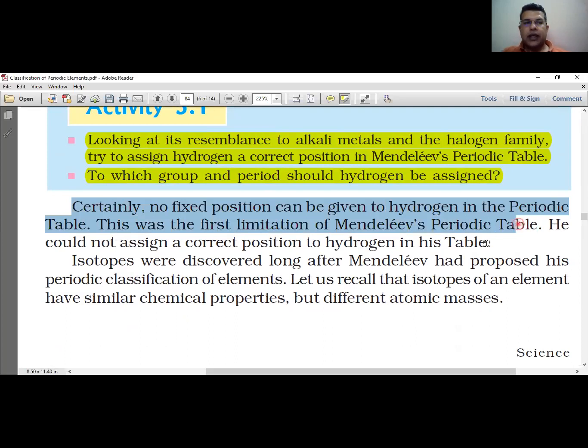He could not assign a correct position to hydrogen in his table. Because scientists have many problems in this positioning, Mendeleev's periodic table's first limitation was the correct position of hydrogen.